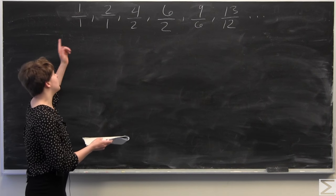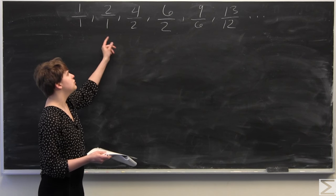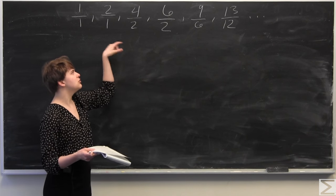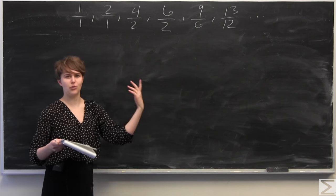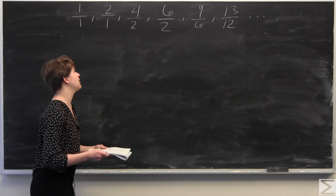We go from 1 to 2, then 2 to 4 — so we skip 2. Then we skip 2 again, and then we skip 3. So what's going on here?